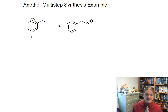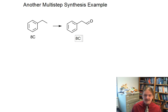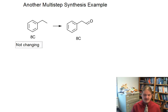Ethylbenzene has 8 carbon atoms in its structure. And our aldehyde also has 8 carbon atoms in its structure. So we're not changing the carbon skeleton. This is important because it eliminates some things we have to think about.